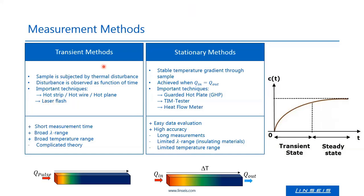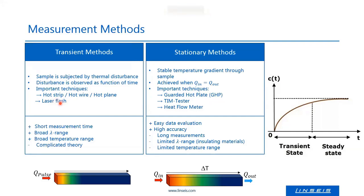The transient methods can be divided into two different paths. One is the hot wire methods, and the other is the optical methods like laser flash or xenon flash. Both are transient methods — you apply a short pulse for laser flash and measure the temperature increase. The hot wire techniques can apply short or longer pulses, or heat can be applied during the whole measurement.